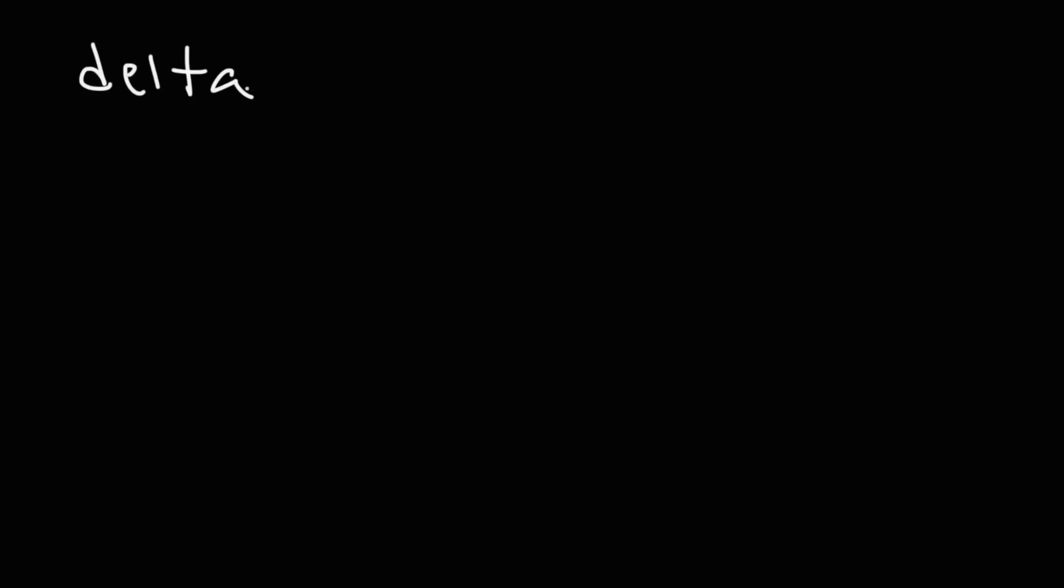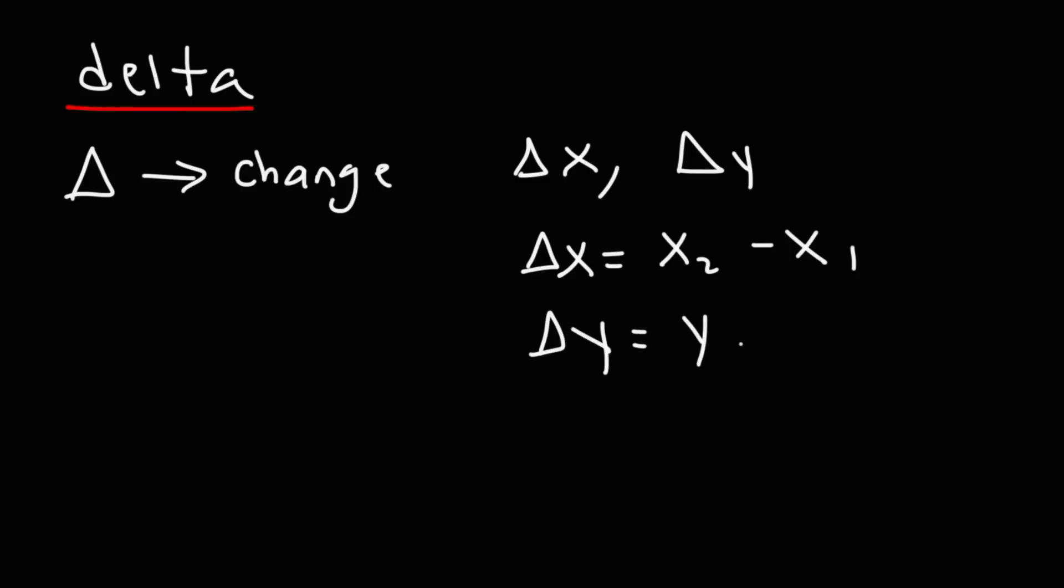The next symbol is delta. Now you might see delta in two forms. You might see it as a triangle. In this case, this represents change. So delta x, that's the change in x, or delta y, the change in y. Delta x might be the difference between two x values, x2 minus x1. Delta y could be the final y value minus the initial y value. But it represents the change in something. Now you might see delta also in the form of a Greek symbol. So this also means delta.